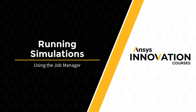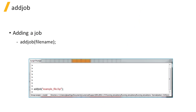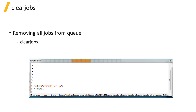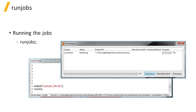Lumerical's products include a Job Manager allowing you to run concurrent calculations using the resources set in the Resource Manager. The Add Job command will add the specified project to the queue of simulations to be run. The Clear Jobs command will remove all jobs from the queue. The Run Jobs command will run all of the jobs in the queue.